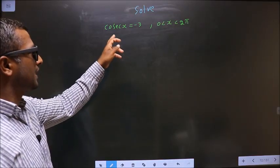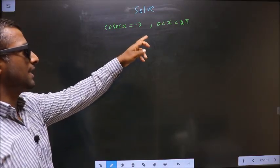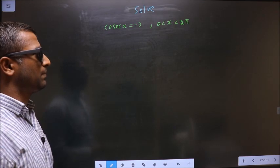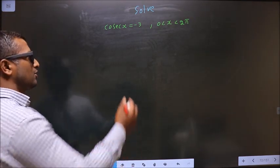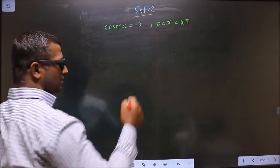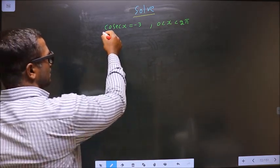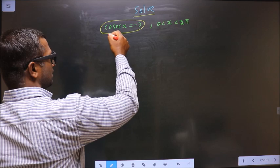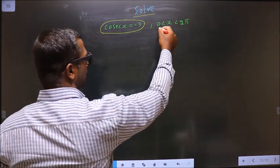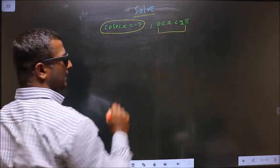Solve cosecant x equals minus 3 where x lies between 0 to 2π. They told you to solve, so you should find the values for x satisfying this equation and also it should lie in this interval 0 to 2π.